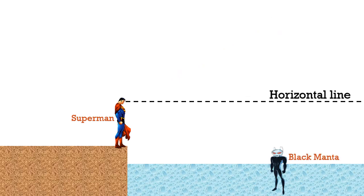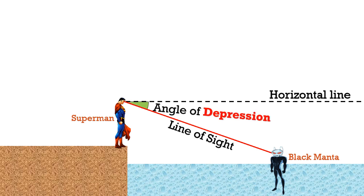In an alternate universe, it was Black Manta who came along. So in this case, Superman has to lower his laser beam eyes, so his line of sight forms an angle below the horizontal line that we shall call the angle of depression.